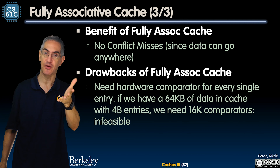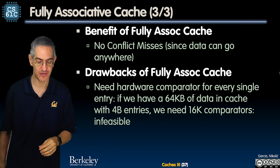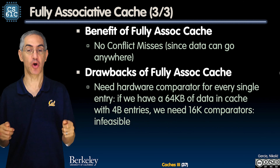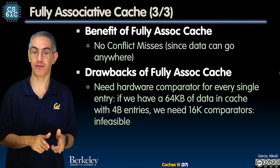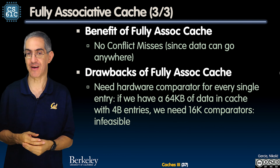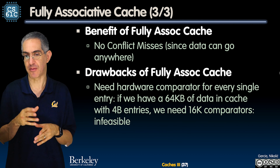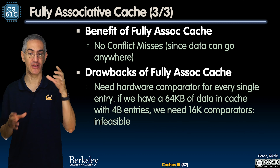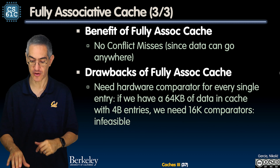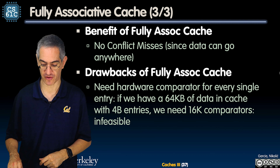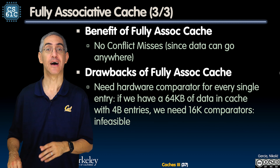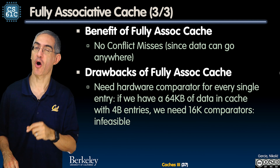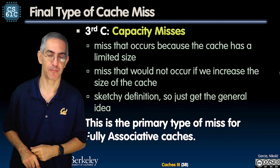The drawback is purely from a hardware point of view — it's hard to build hardware comparators for every single entry. If I have two entries, we can do that. But if I end up with 16,000 comparators, that's just too hard to do in a normal cache. A software fully associative cache is great, but a hardware one is hard to build.